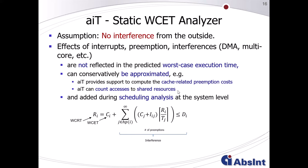These effects can conservatively be approximated, for instance by using AIT support to compute cache-related preemption costs or static resource access counts to shared resources. These additional timings can then be added during the system-level scheduling analysis on top of the worst-case execution time.